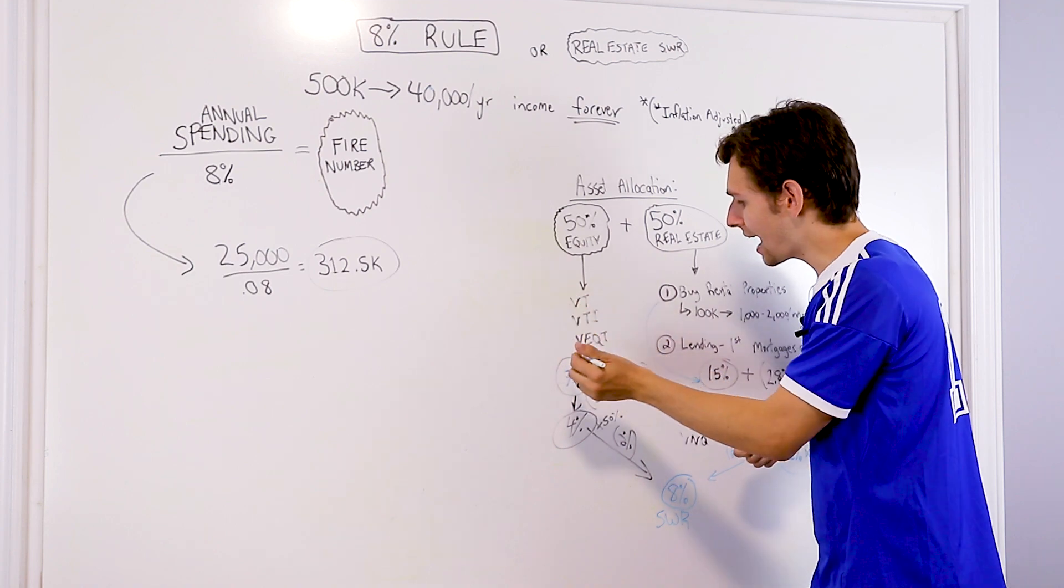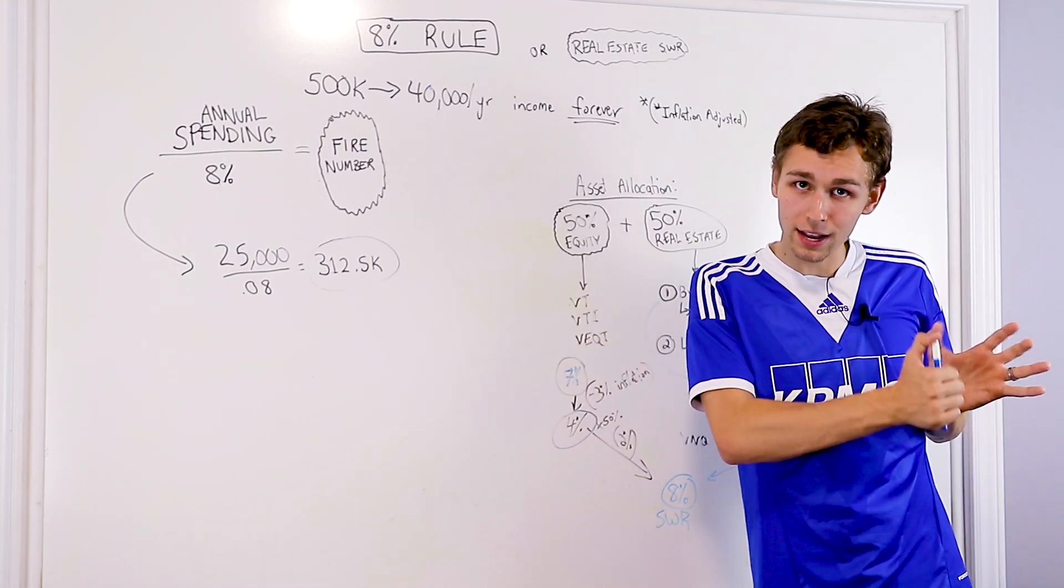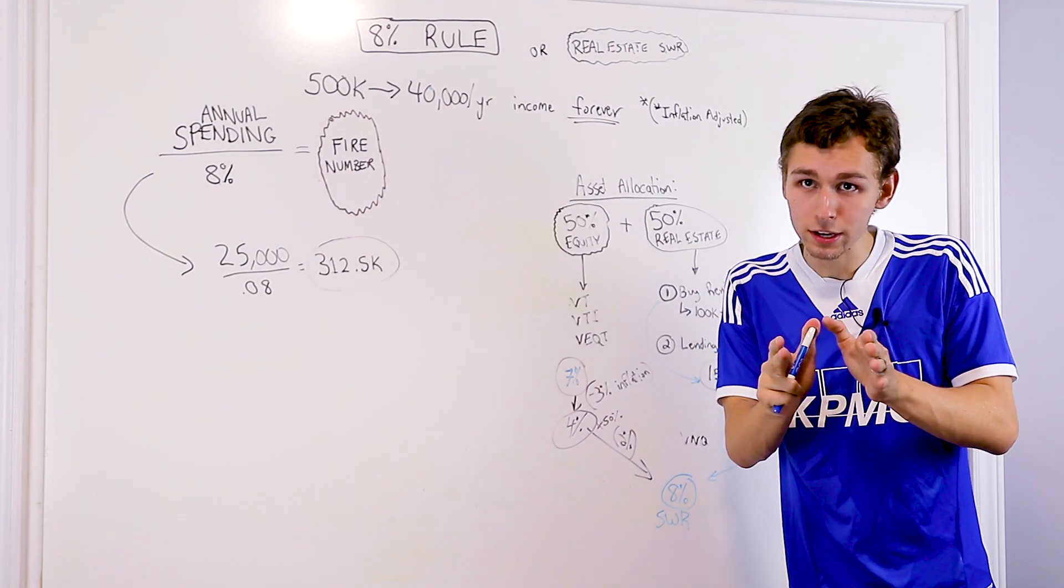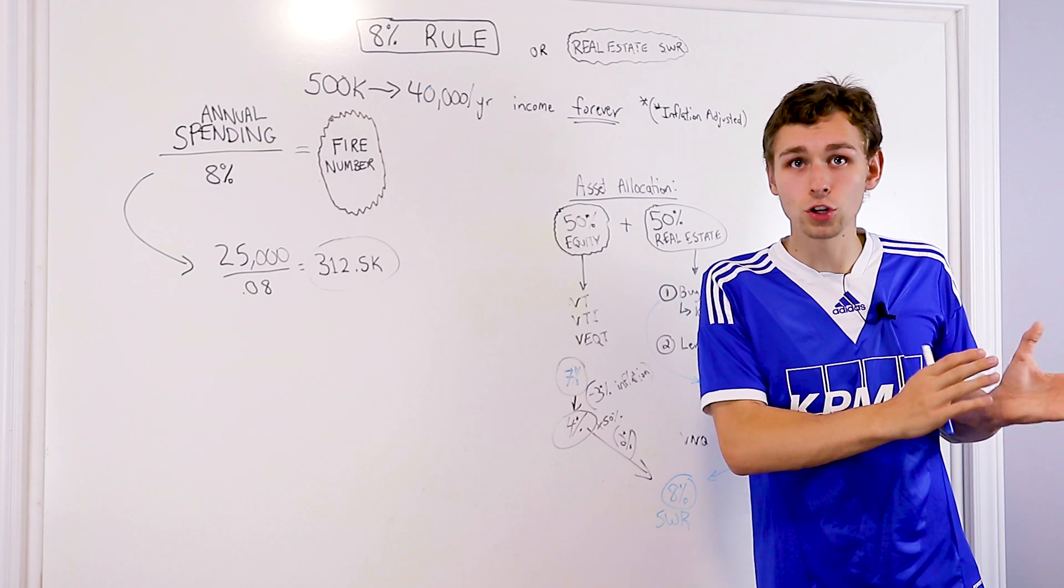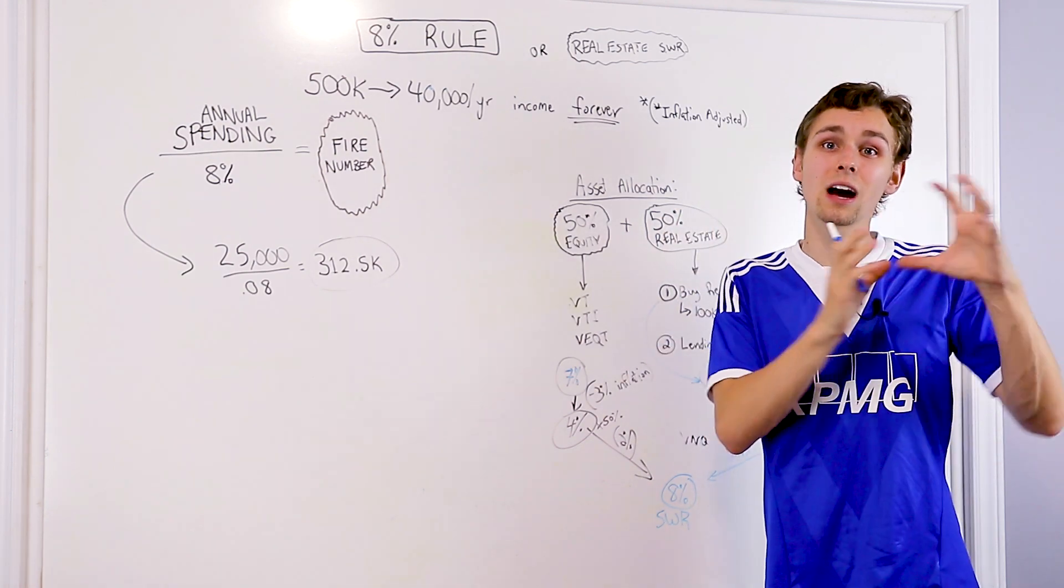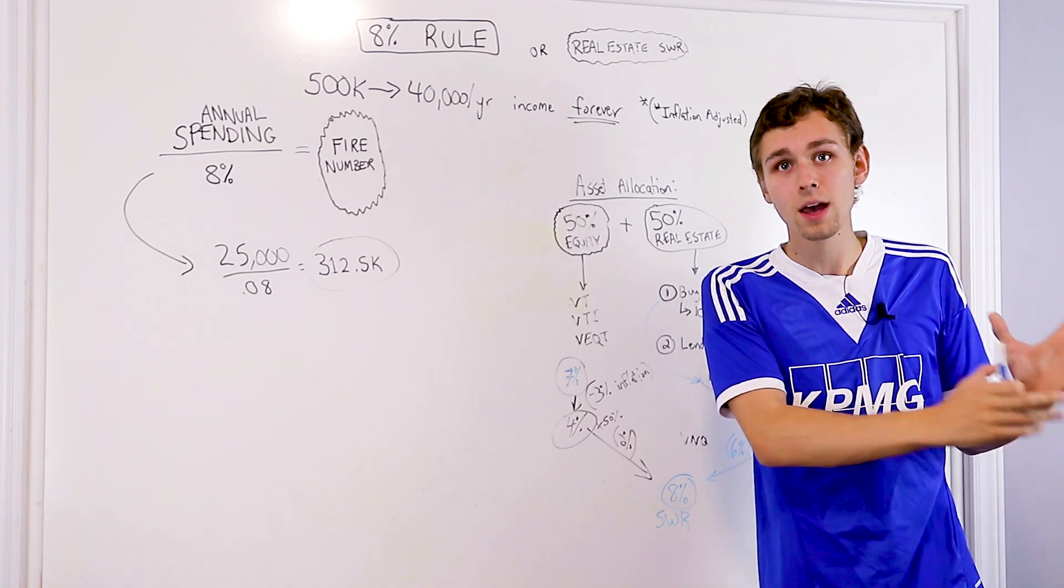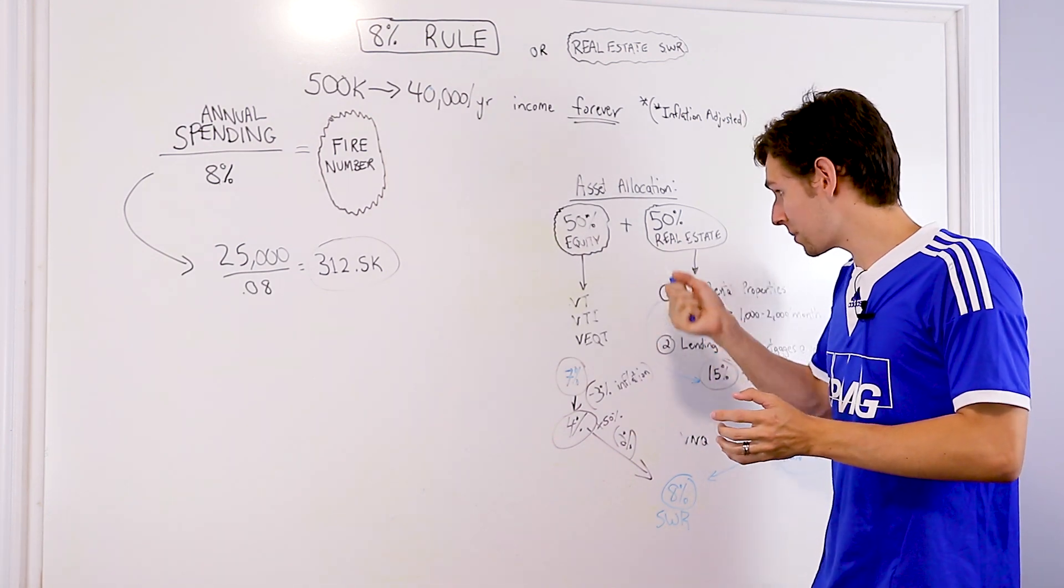I like VT, VTI, VEQT. These are like all in one equity focused, purely equity focused is the important piece. So I want to just own collections of stocks. I don't want to own any fixed income or any bonds. The real estate percentage of my allocation is going to cover all that for me. It's going to create that fixed income. So all I need to focus on is just the equity play.